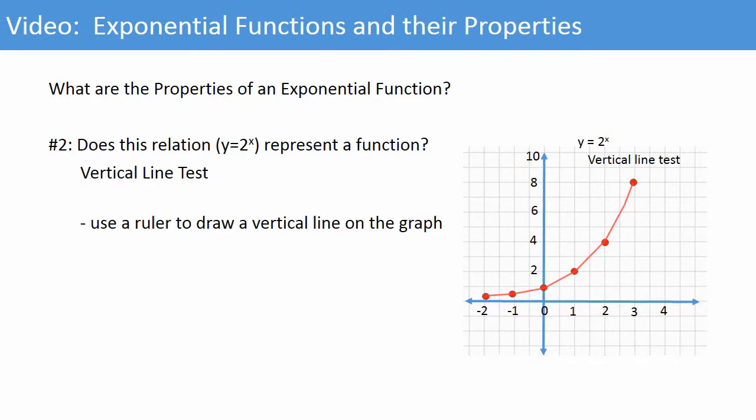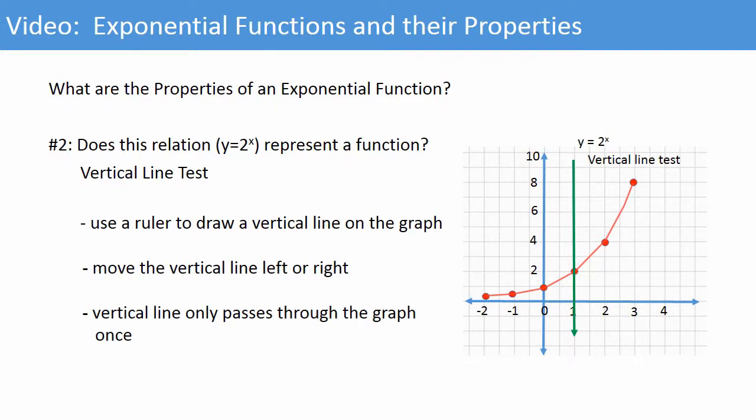Use a ruler. Draw a vertical line anywhere on the graph. Move the vertical line left or right. The vertical line only passes through the graph at one point. That means that it passes the vertical line test, which means the relation y equals 2 to the x represents a function.